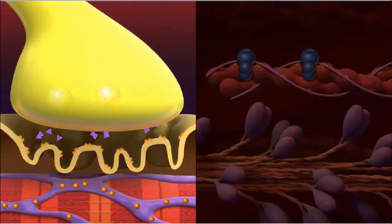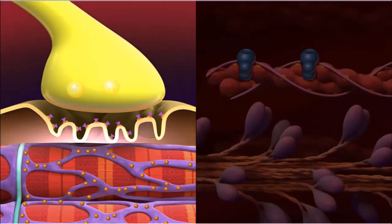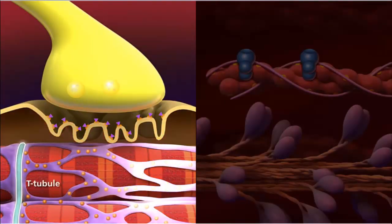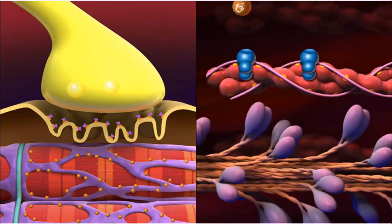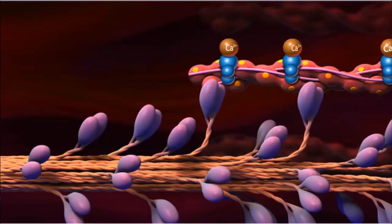Neurotransmitter molecules are released from a neuron and bind to receptors, which depolarizes the membrane of the muscle fiber. The electrical impulse travels down the T-tubules and opens calcium stores. Calcium ions flow to the myofibrils, where they trigger a muscle contraction.